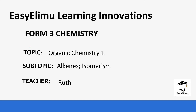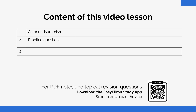Welcome to EZLM Learning Simplify. My name is Ruth and today we are going to be learning about organic chemistry. We are going to be looking at isomerism in alkenes — the different types of isomerism that occur in alkenes — and then you will get a chance to look at how those isomers form and some practice questions.